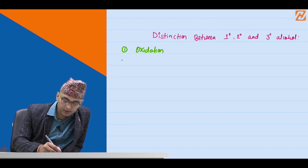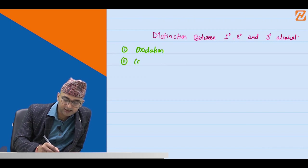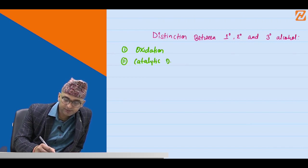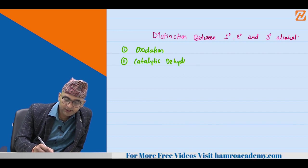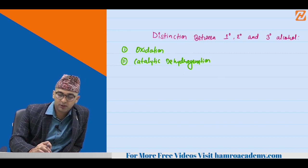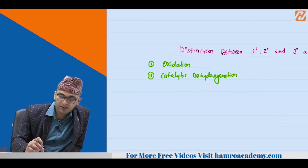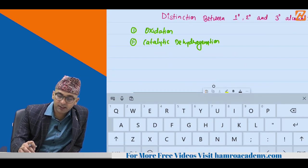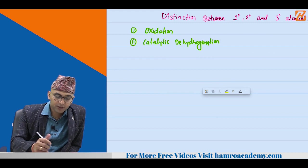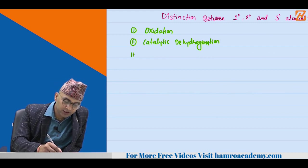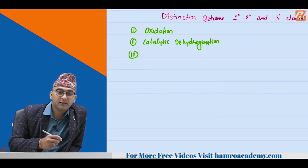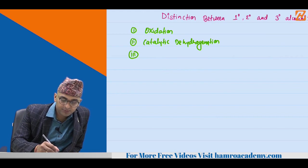Number two method we have already discussed is catalytic dehydrogenation. We can use this reaction as well to distinguish primary, secondary and tertiary alcohol. And the third and very very important method we have to discuss now is Victor Meyer method.